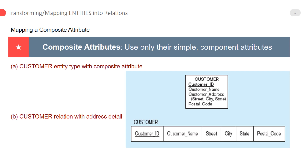When mapping a composite attribute, use only its simple component attributes. The reason is that if we want to find students from a specific city or state, it will be easy to find them. For example, a customer address stored in three separate columns — address is a composite attribute. We store it in multiple columns rather than a single column so that we can retrieve records of customers from a specific city, like Multan, easily.